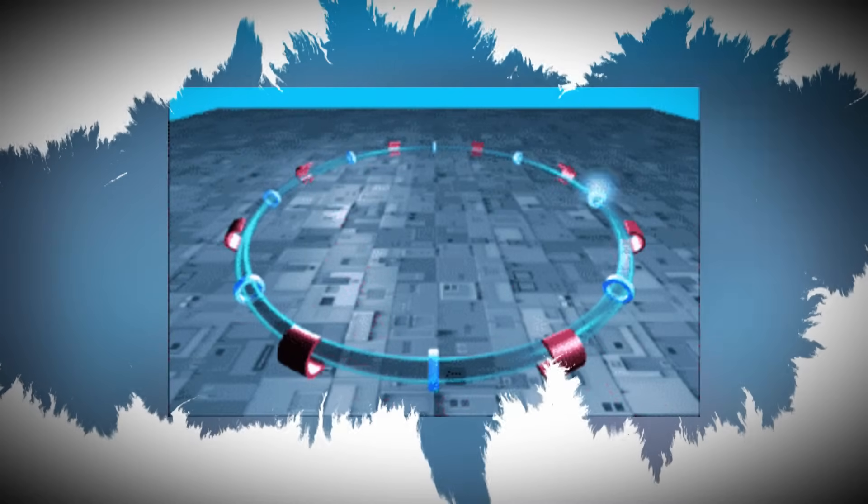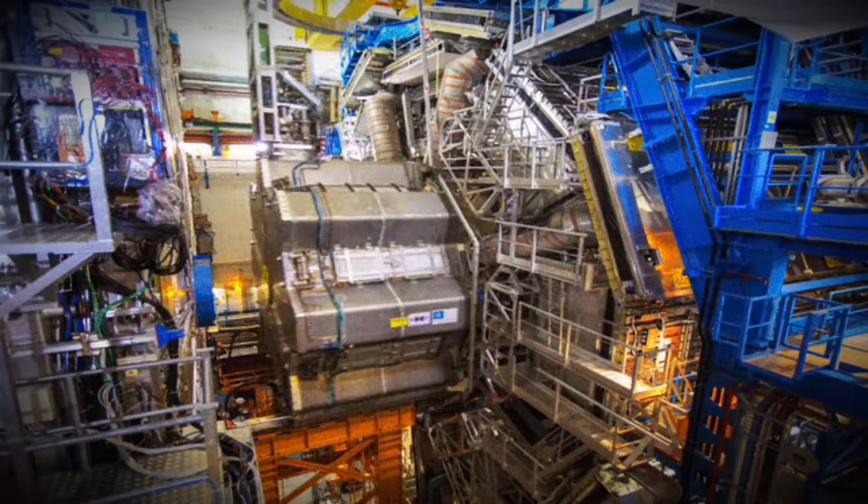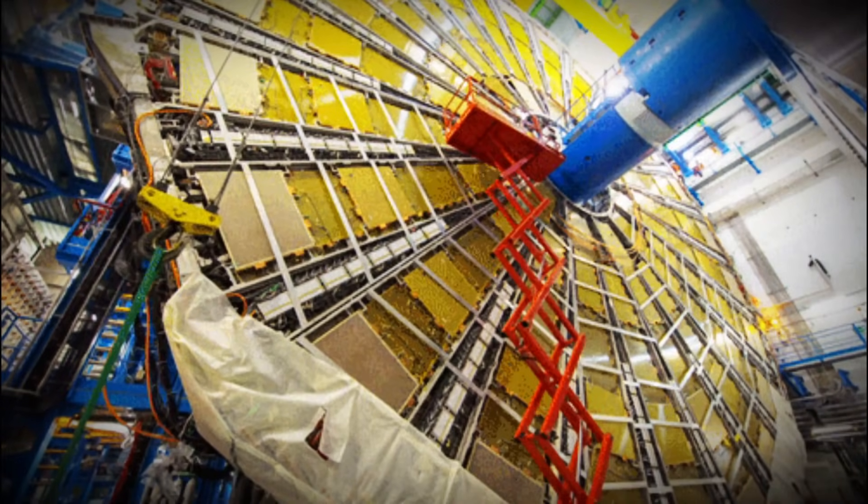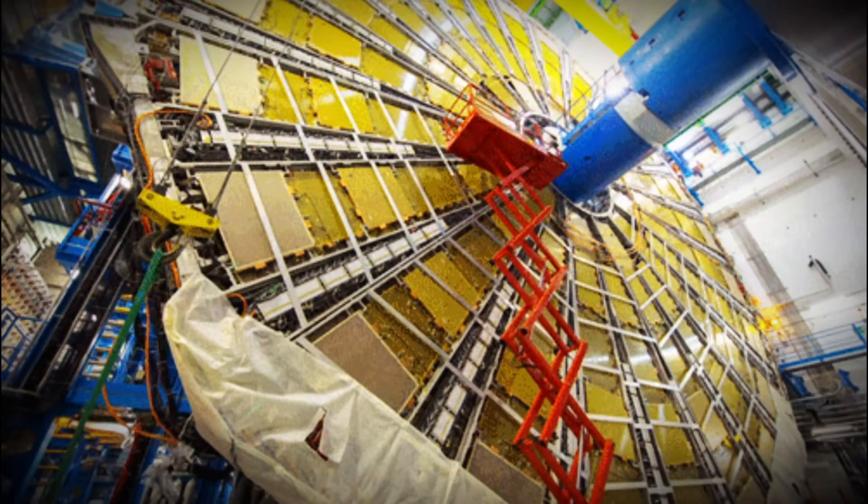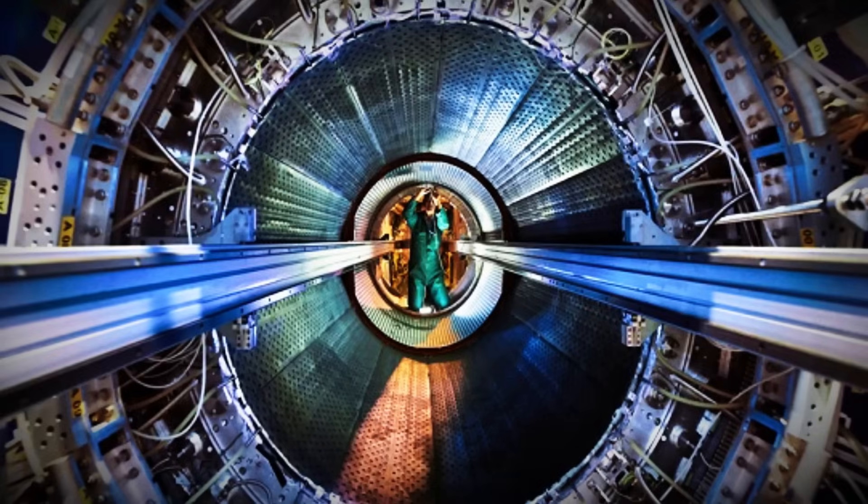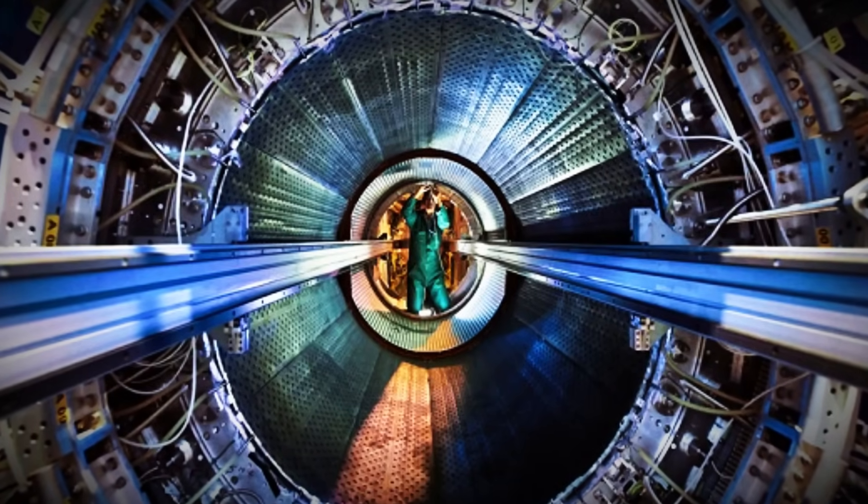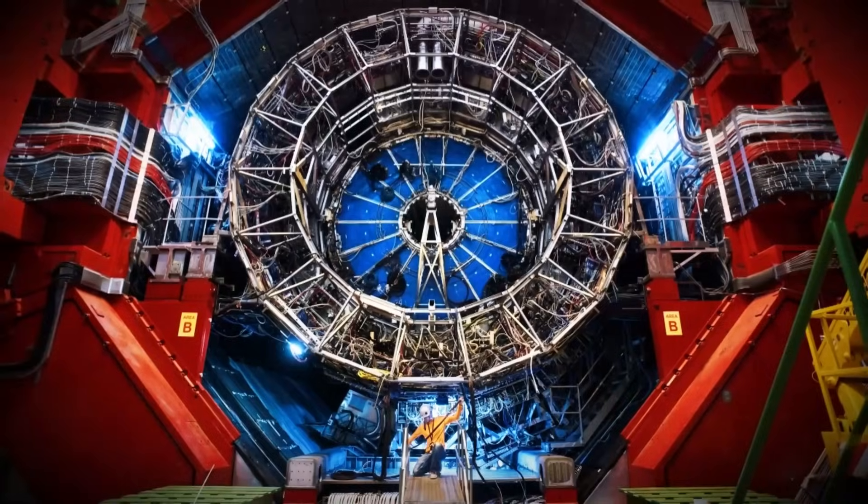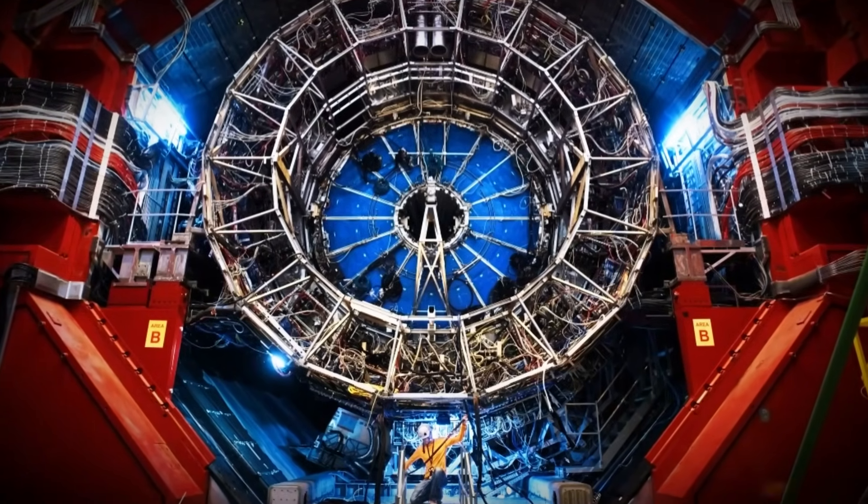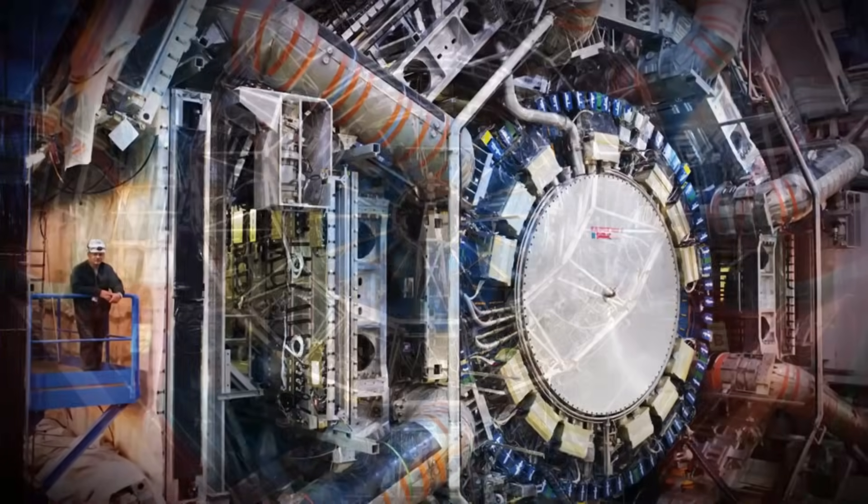On July 4, 2012, scientists at CERN confirmed the Higgs boson's existence by observing its decay into other particles, including photons and Z bosons, which mediate weak nuclear interactions. This monumental discovery marked a pivotal moment in physics, but also raised profound new questions. Could multiple versions of the Higgs boson exist? What role does the Higgs field play in the universe's evolution?